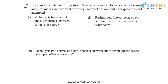The problem statement in question 7 says: in a class test containing 10 questions, 5 marks are awarded for every correct answer, minus 2 marks are awarded for every incorrect answer, and 0 for questions not attempted. We have to solve 3 parts. Let's go through each of them one by one.